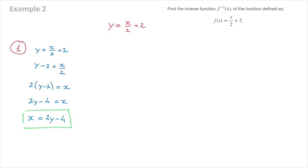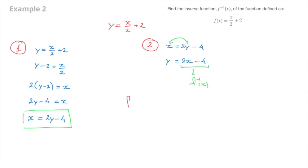We move on to step 2. Starting from x equals 2y minus 4, we swap the x and the y, which gives y equals 2x minus 4. Since the right-hand side is the inverse function, the final answer is: the inverse function of f equals 2x minus 4.